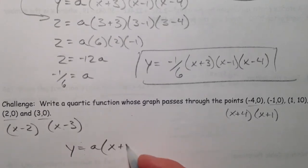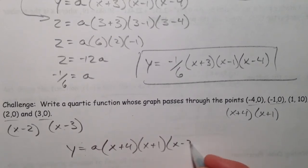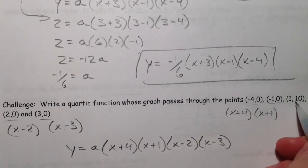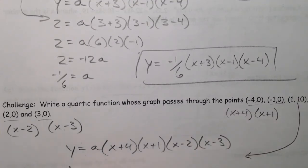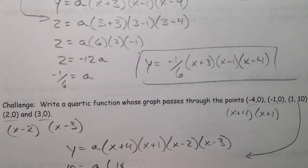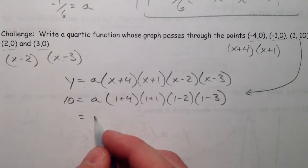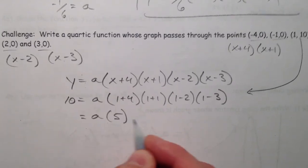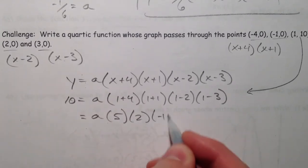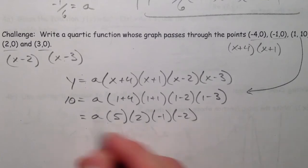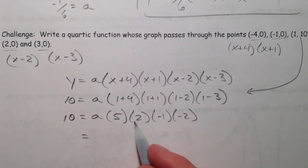A times, and multiply all those together. You don't have to put them in order. And (1, 10) is a solution. So, 1 plus 4, 1 plus 1, 1 minus 2, 1 minus 3. Notice that we've done the same thing on all of these. So, 5, 2, negative 1, negative 2.